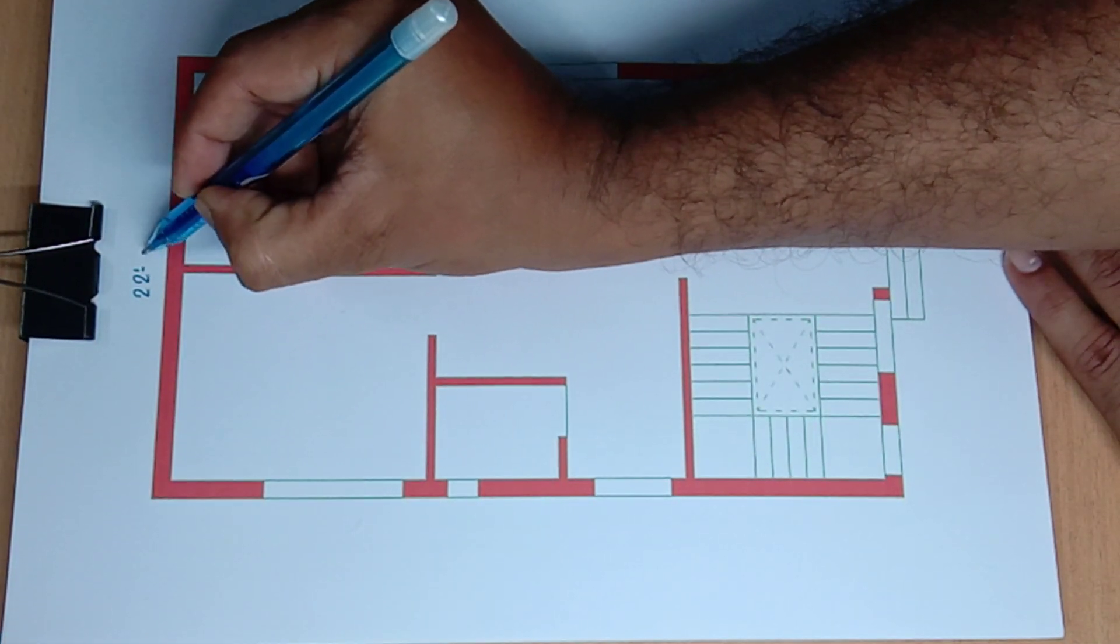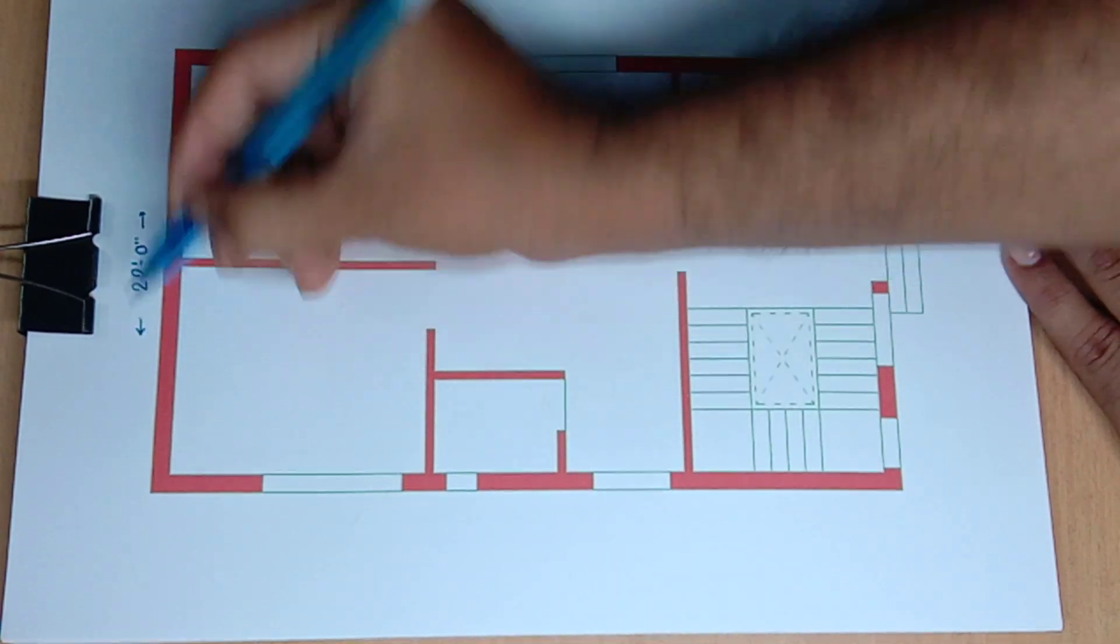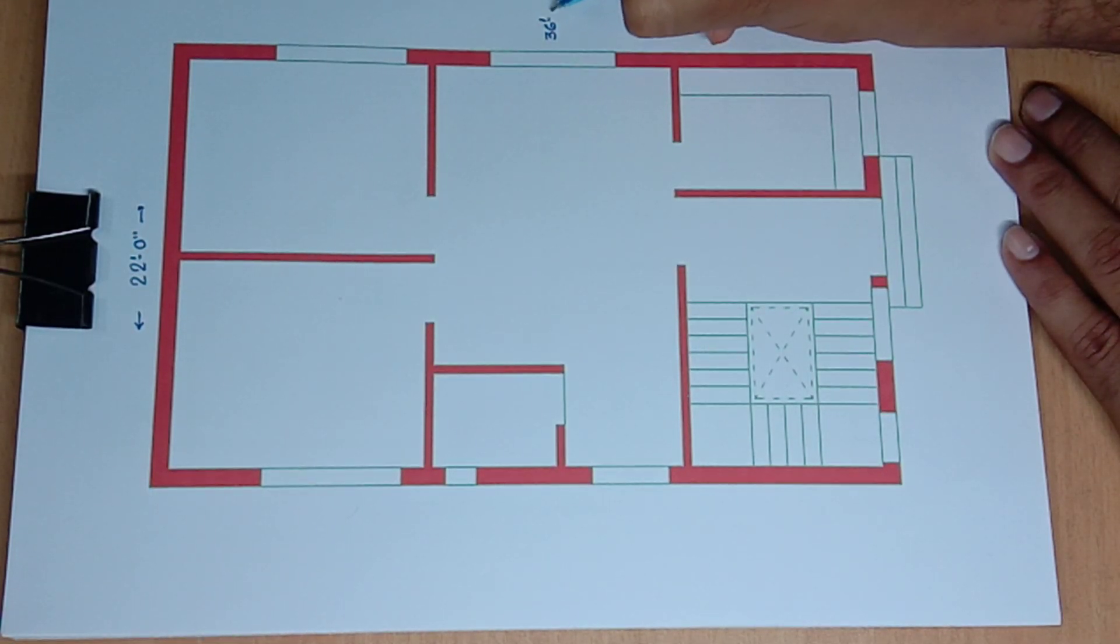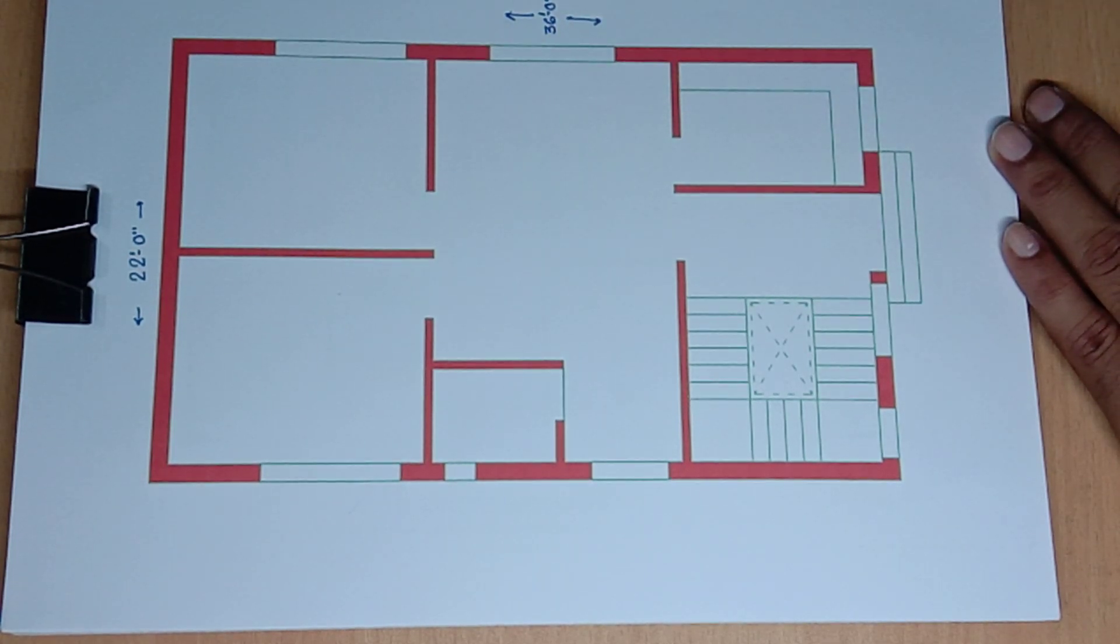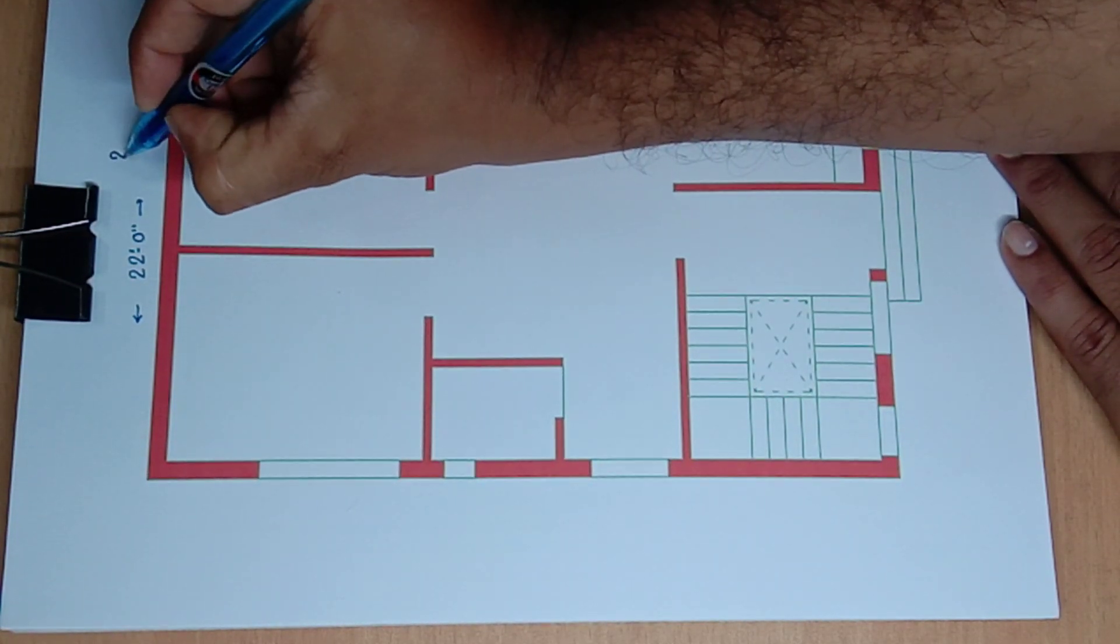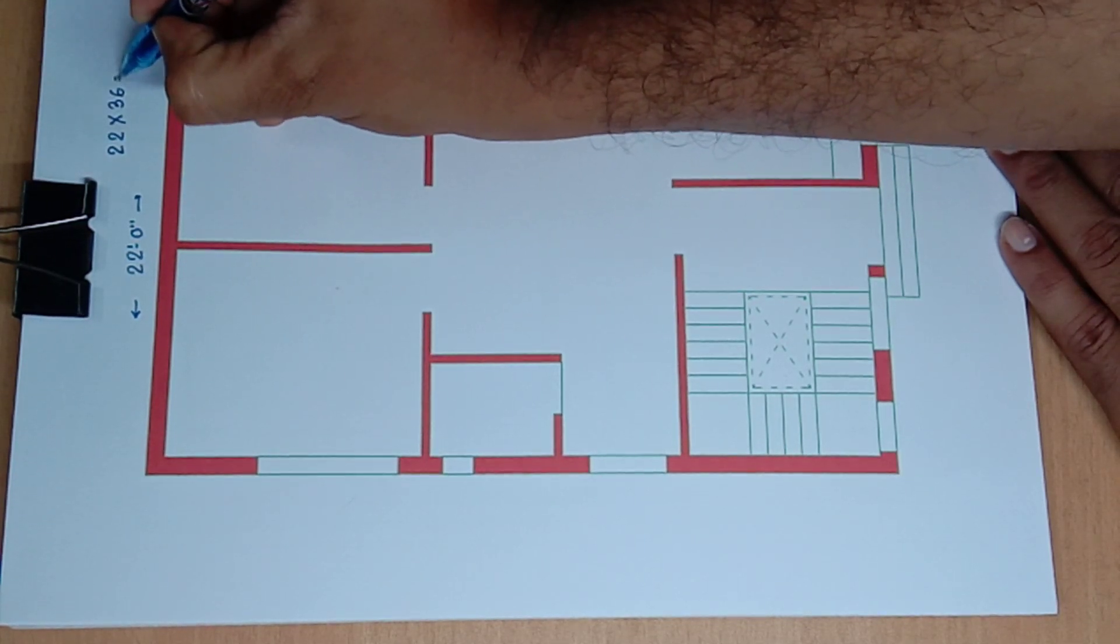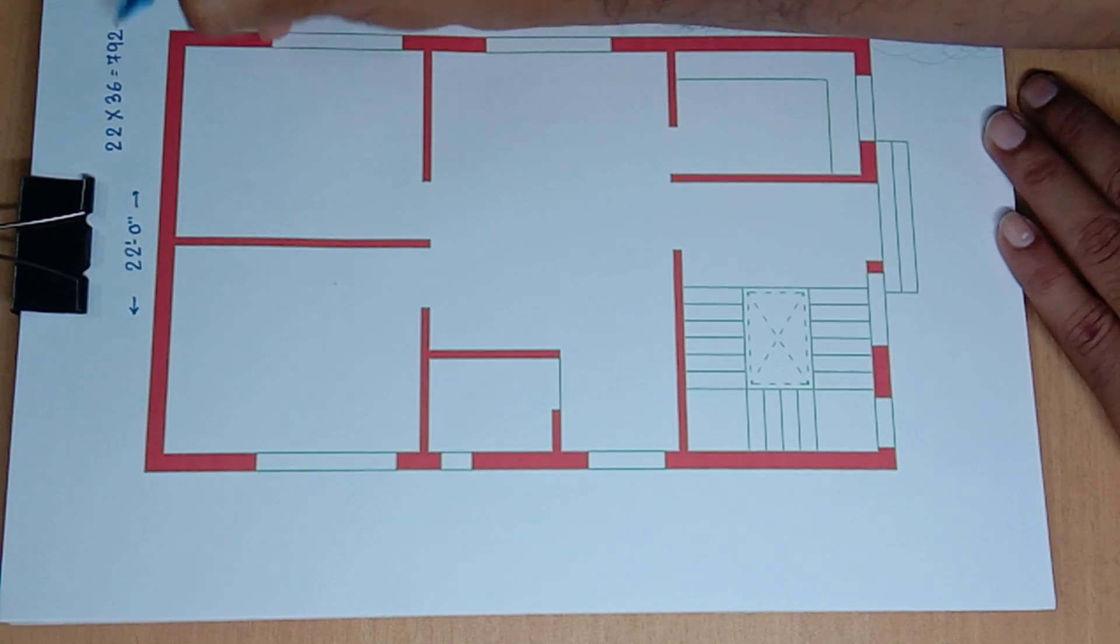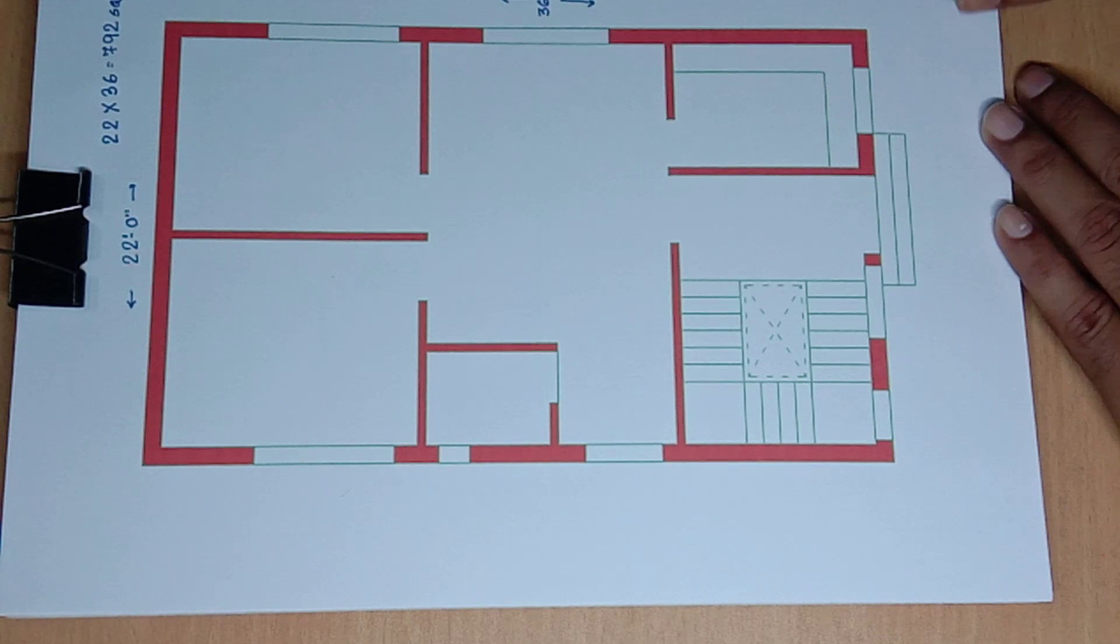22 feet and 36 feet 0 inch distance house plan design. 22 into 36, 792 square feet.